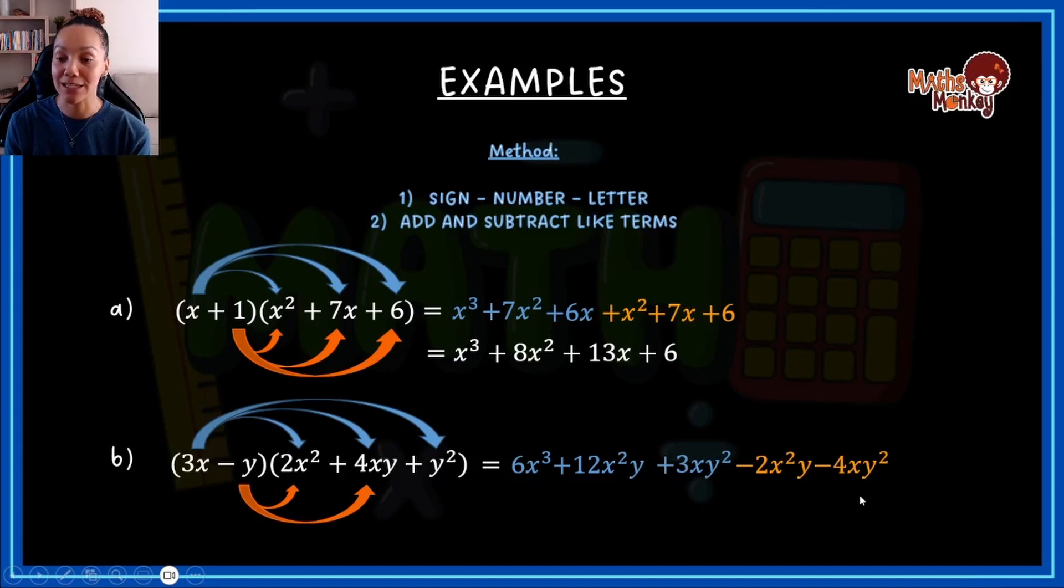So it will be minus 4xy squared. Then the last one, minus y times positive y squared, will give me negative times positive is negative. And there's no numbers to multiply. And I've got 3y's.